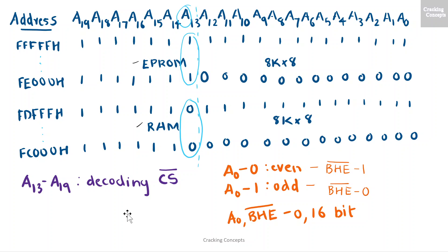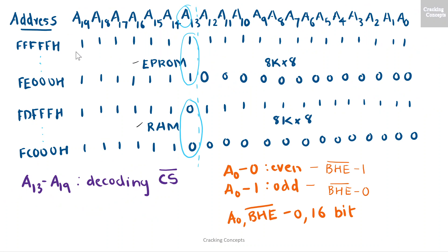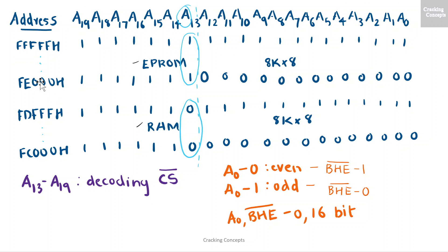Since 8086 has 20 address lines, in the memory map we will show the address lines from A0 to A19. Now we will first draw the memory map for EPROM. As we derived, we know the starting and ending address of the EPROM 8K segment. So we will begin with the ending address FFFFFH, map it till the starting address FE000H, and write the corresponding binary values to fill in the address line values.